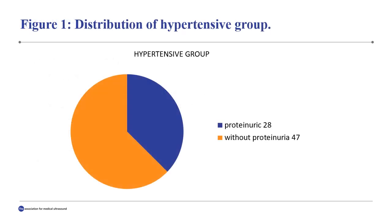Figure 1 shows the distribution of the hypertensives. The blue represents the 28 proteinuric hypertensives, while the orange represents the 47 hypertensives without proteinuria.